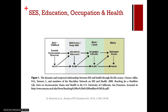Each of those things has an impact on the next level, both in terms of socioeconomic and sociodemographic factors, as well as your health. So it's not a one-to-one relationship — it's a web of causation.